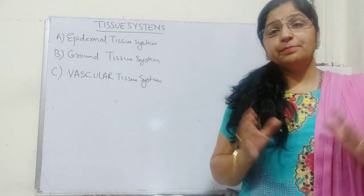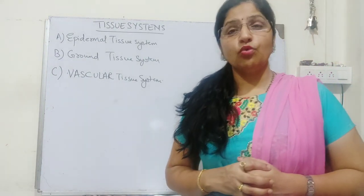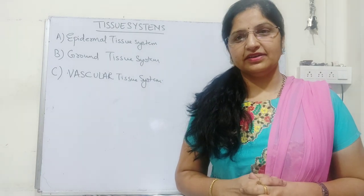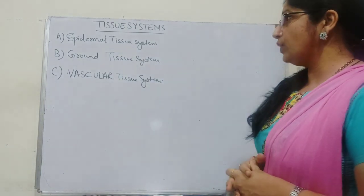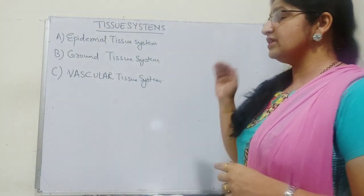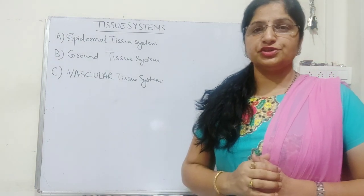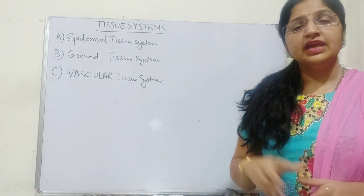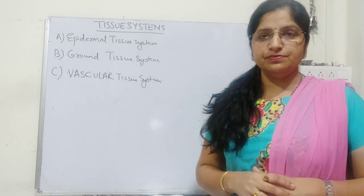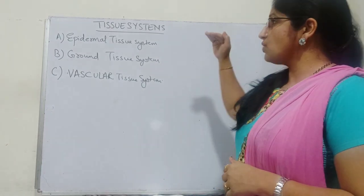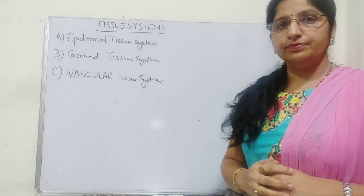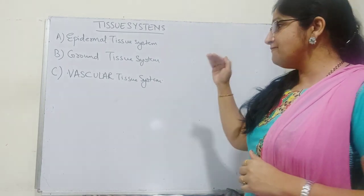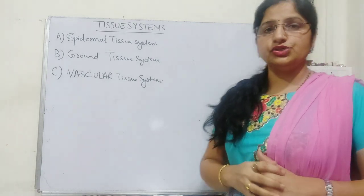Hello everyone, I am back with one more video on the plant anatomy topic. In this topic we are going to talk about the different types of tissue systems making a complete plant body. There are three types of tissue systems: epidermal tissue system, ground tissue system, and vascular tissue system.